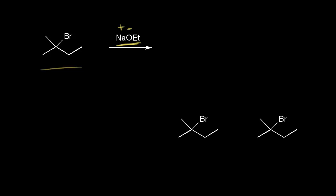The carbon directly bonded to the bromine is the alpha carbon, and the carbons directly bonded to the alpha carbon are the beta carbons. I'm going to call this carbon beta one, this one beta two, and this one beta three.